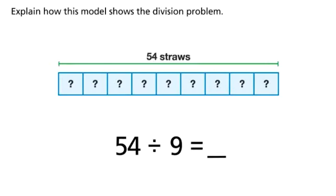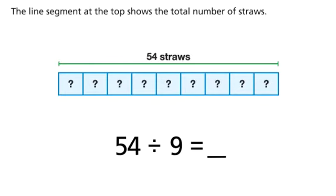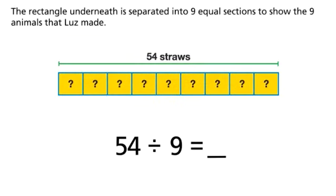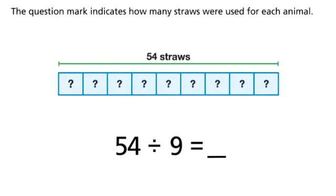Explain how this model shows the division problem. The line segment at the top shows the total number of straws. The rectangle underneath is separated into 9 equal sections to show the 9 animals that Luz made. The question mark indicates how many straws were used for each animal.